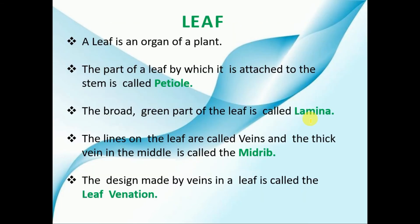To summarize: a leaf is the green colored part of the plant. The part of the leaf by which it is attached to the stem is known as the petiole. The broad and green part of the leaf is known as the lamina. The lines on the leaf are known as the veins, and the thick vein present in the middle is known as the midrib.